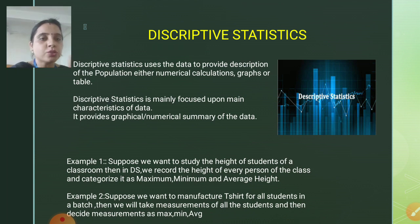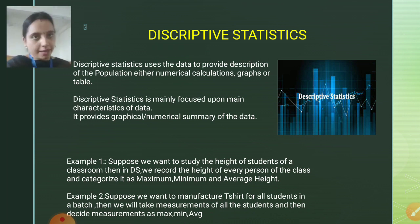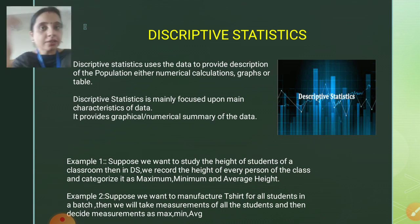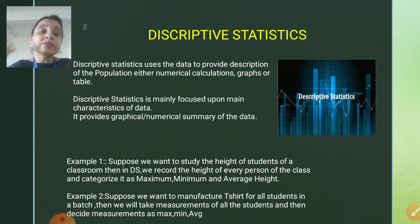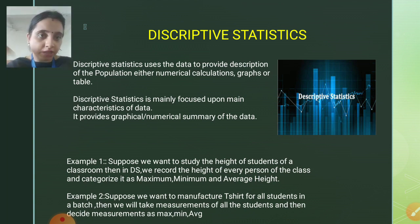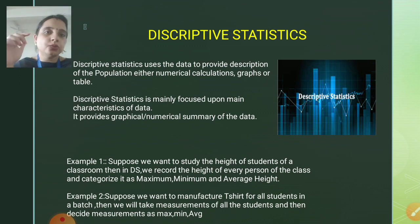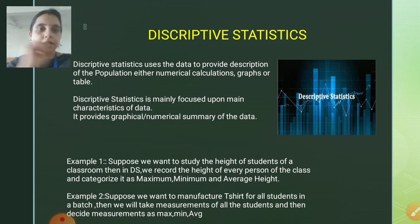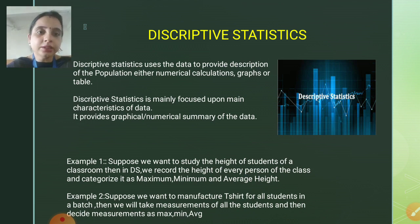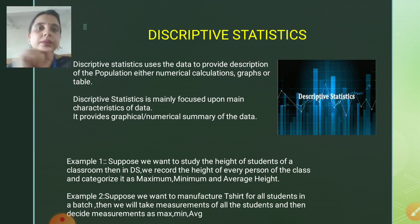The second example: suppose we want to manufacture t-shirts for all students in my batch. If I have 15 students and I need to manufacture t-shirts, I should have a rough idea about the measurements of the students so that I can give the measurement to the tailor and accordingly the tailor is going to stitch the t-shirts. In descriptive statistics, I need to take the measurement of all 15 students — whatever the size is, 40, 42, 45, 46 — and considering all the data, I need to conclude with the measurement as maximum, minimum, and average size.